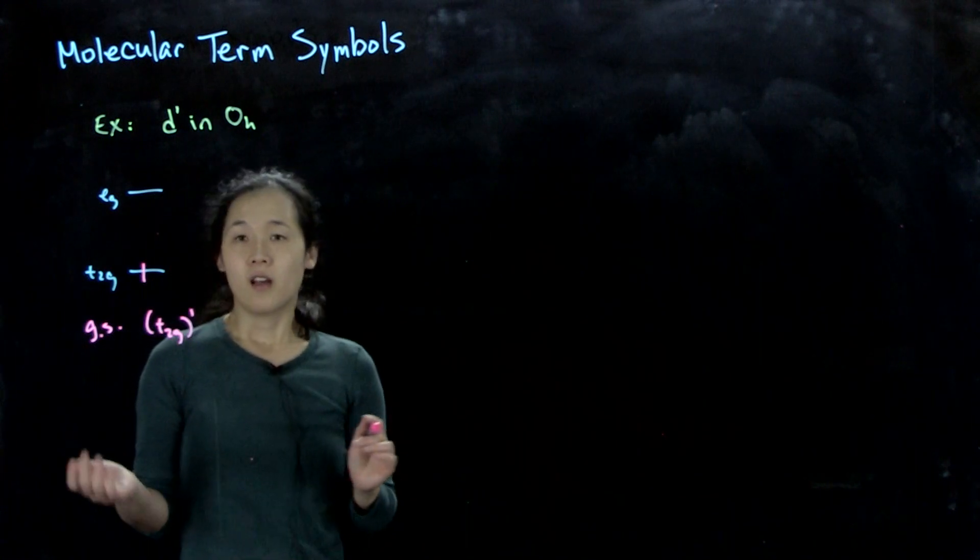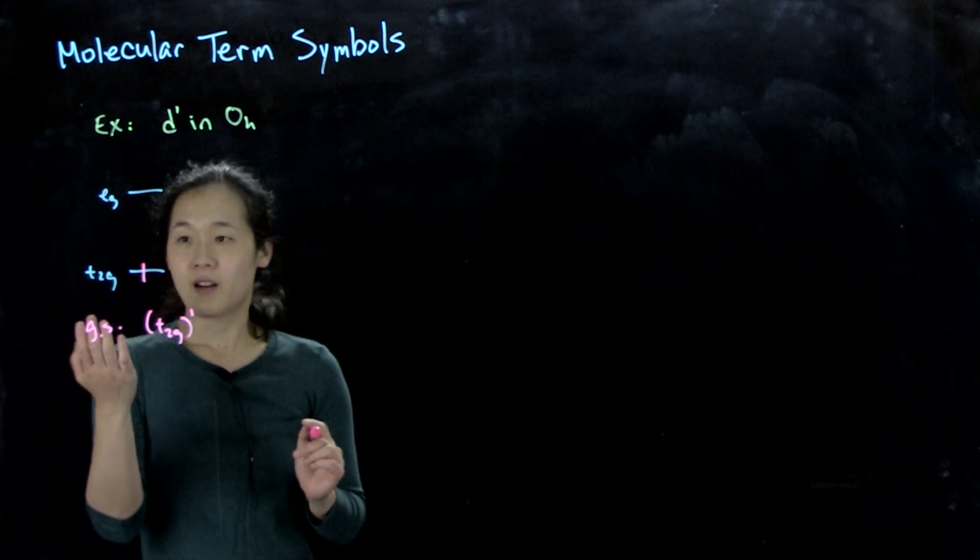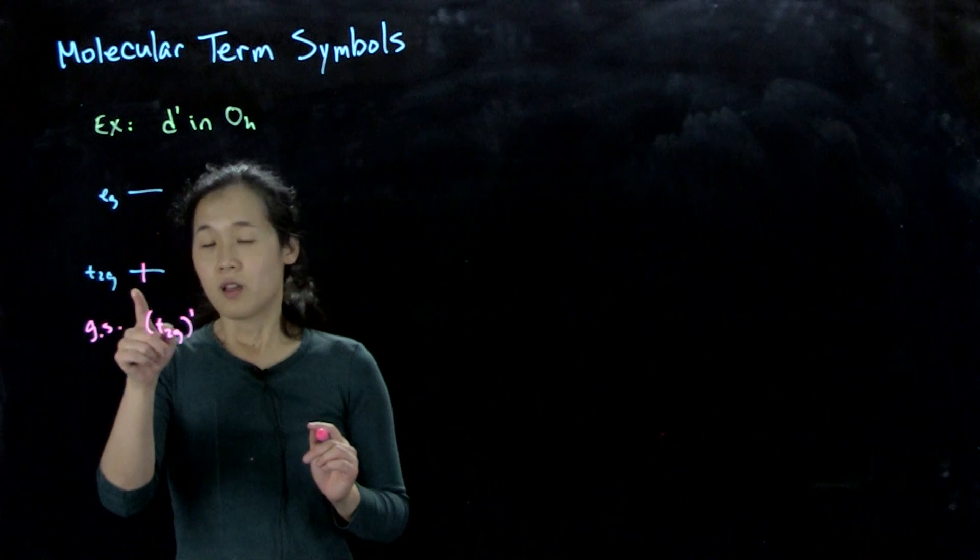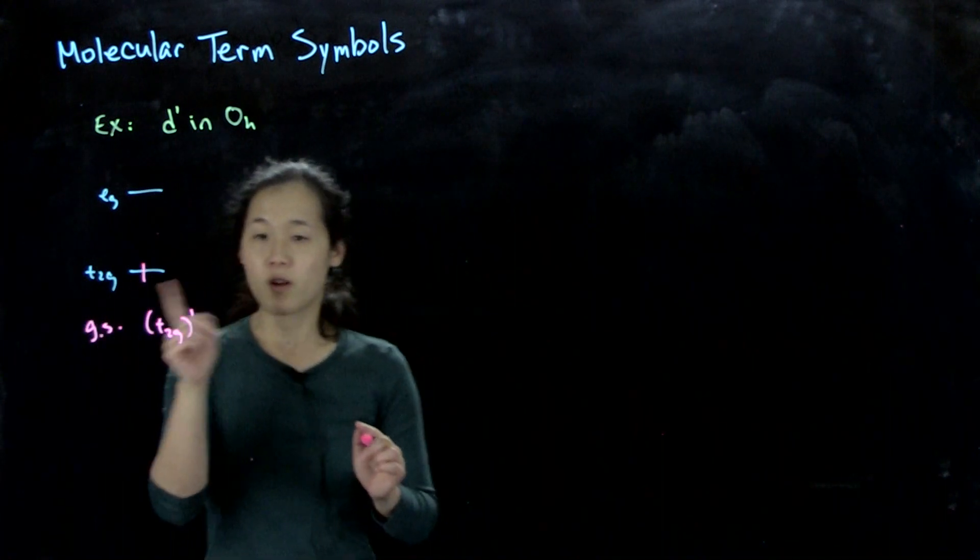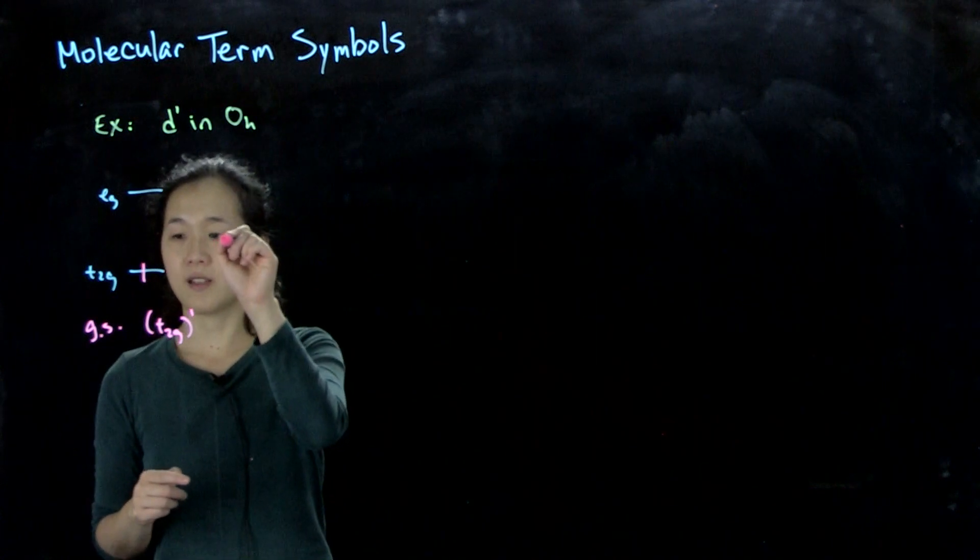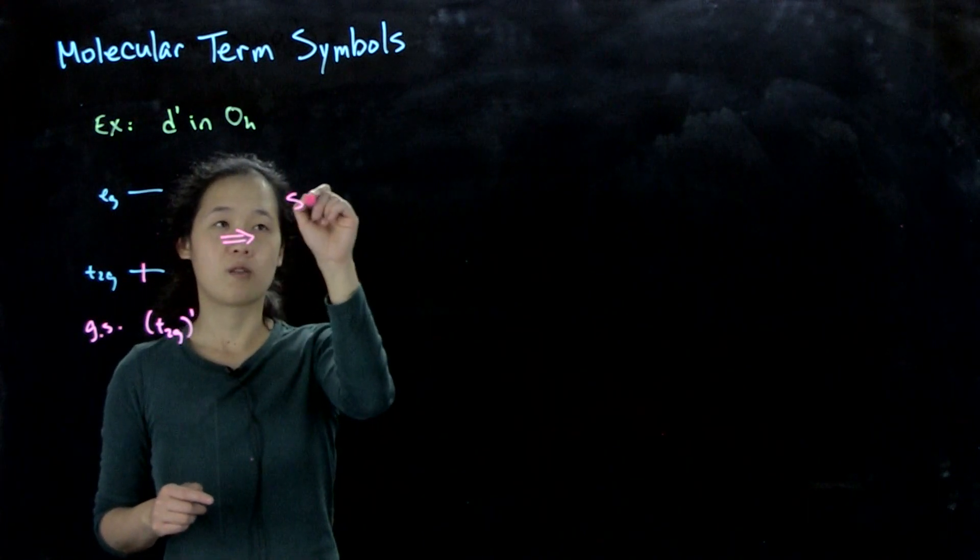So for one electron, it's actually really easy to figure out the term symbol because you can just use the symmetry of the orbitals that it's in. So in this case, we have one unpaired electron, so this will be s equals 1/2.